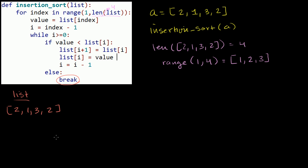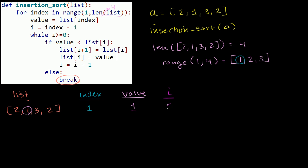Index is going to start off being the first item in the list generated by range(1, len(list)), so index starts off being 1. Then value is equal to the index-th element in list — so list[1], which is the first element (zeroth is 2, first is 1). So value is 1. Then we define i to be index minus 1, so i is 0 — the index of the item to the left of value.